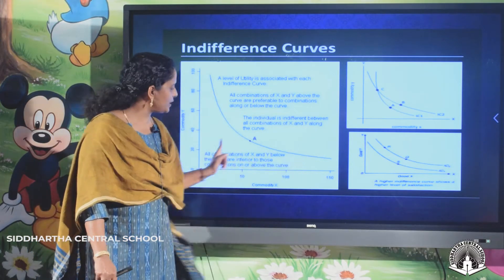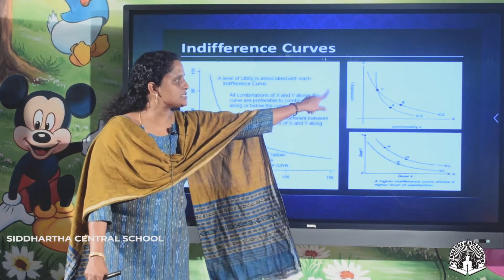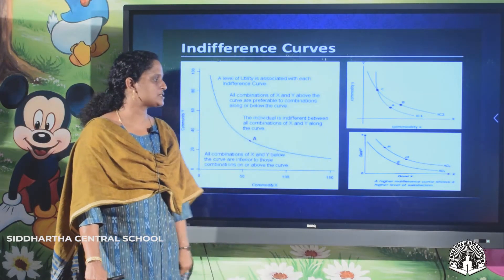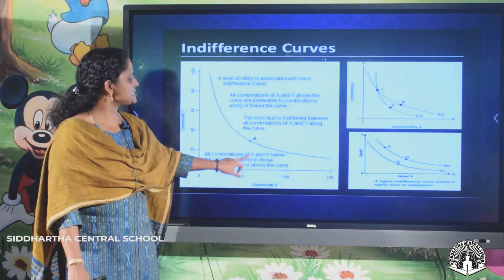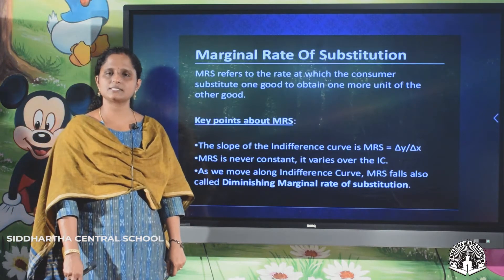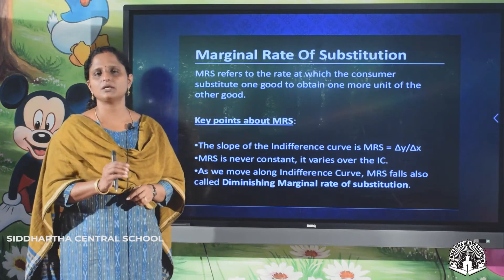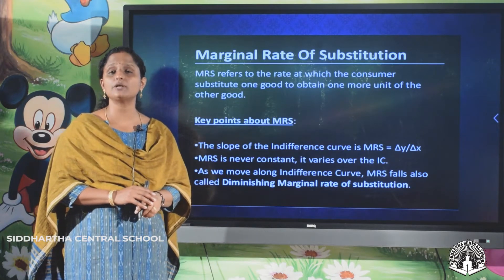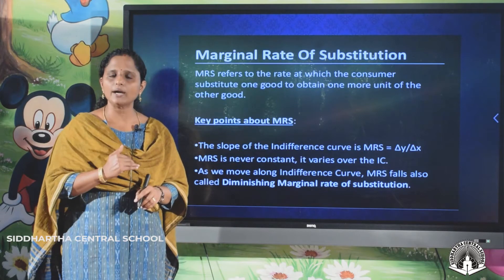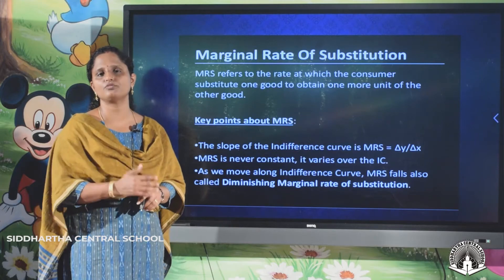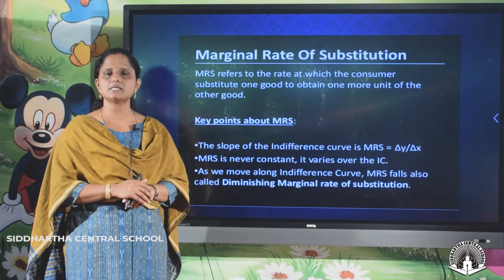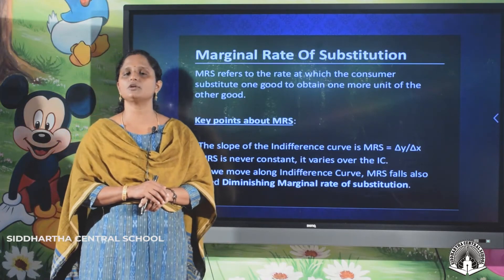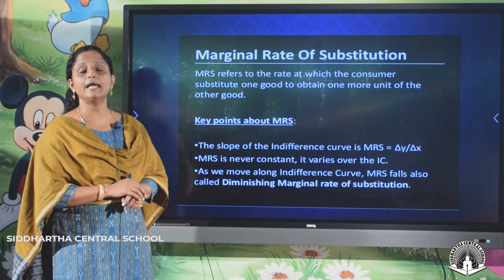To summarize, the indifference curve is downward sloping, convex to the origin, does not intersect other indifference curves, and a higher indifference curve shows a higher level of satisfaction. Now there is one more important topic: the Marginal Rate of Substitution. We already discussed substitution — substituting one good for another, like substituting tea for coffee when the price of tea increases, because tea and coffee are substitutes.